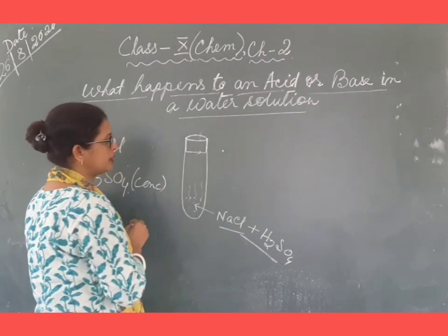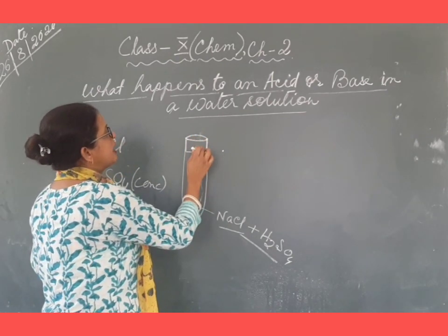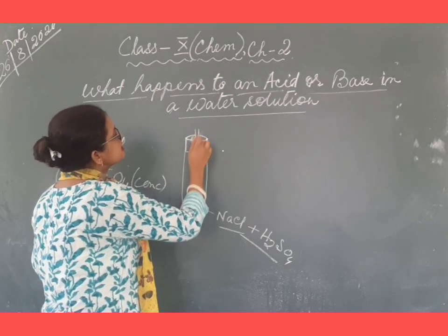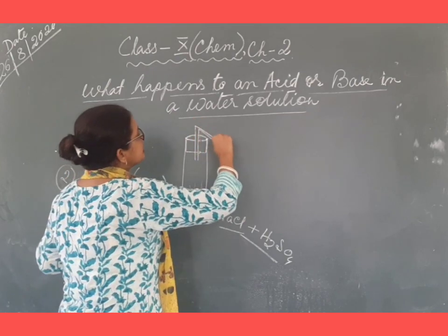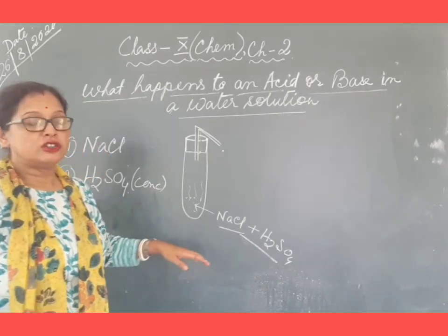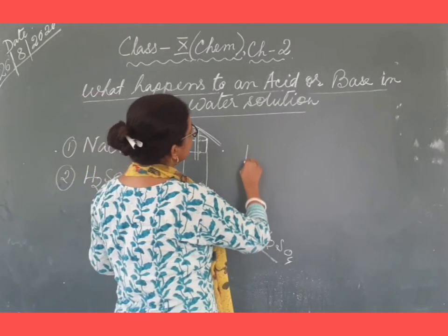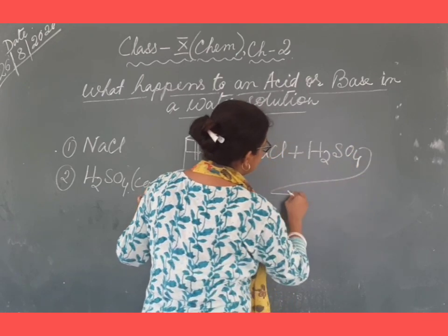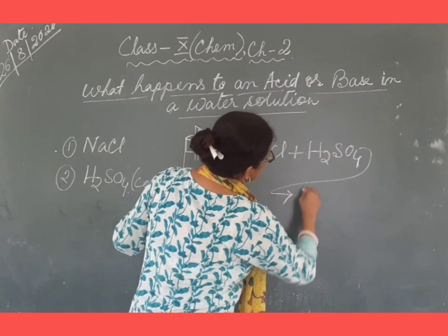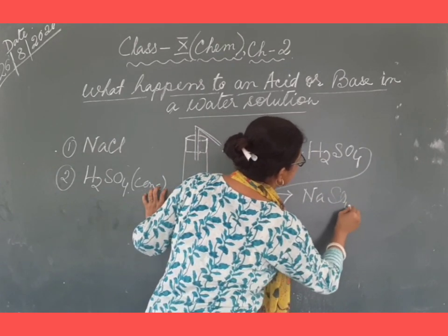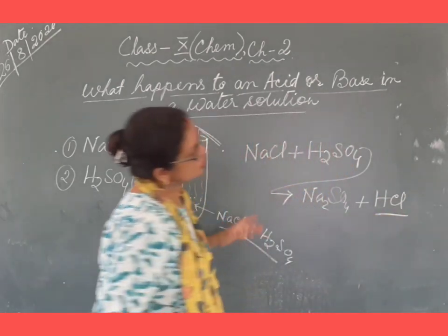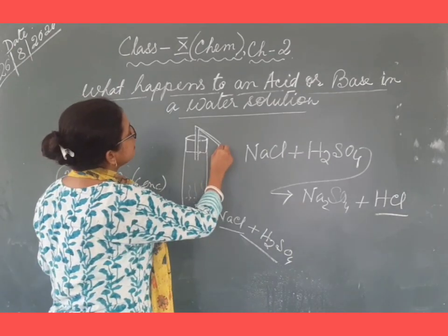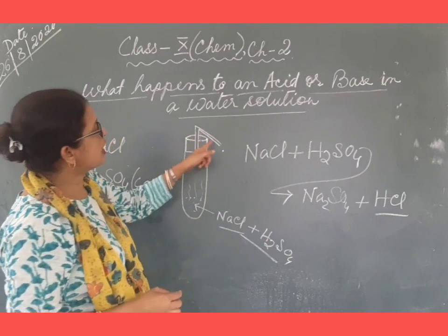After this, a reaction will start taking place and gas will start forming. Through the rubber cork we will insert a small glass delivery tube for collecting the gas which forms because of the reaction between the two reactants. Sodium chloride reacts with sulfuric acid, and as a result we get sodium sulfate plus HCl gas — hydrogen chloride gas — which we collect through the delivery tube.